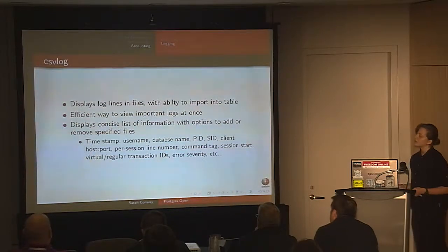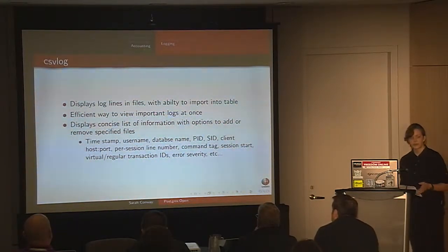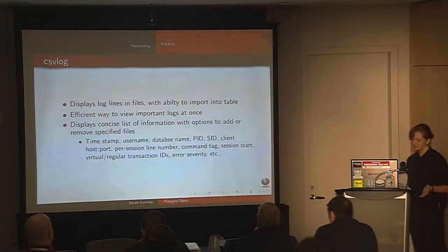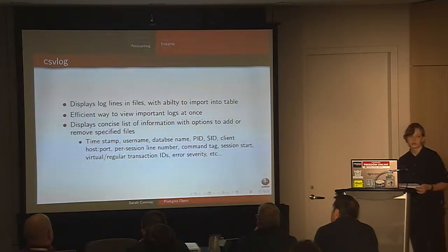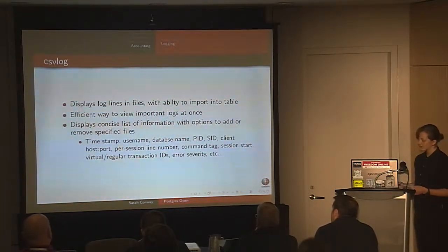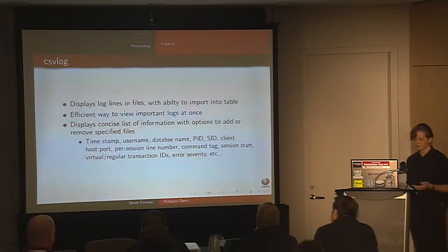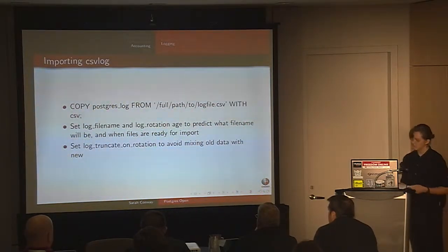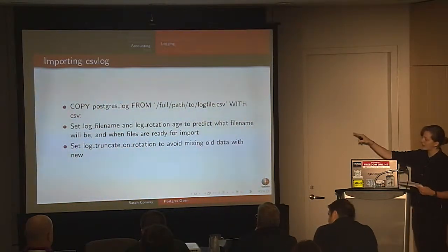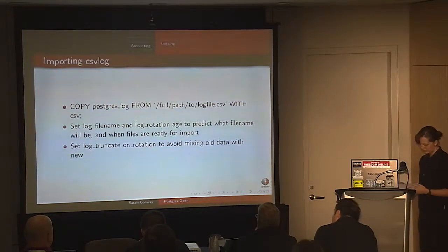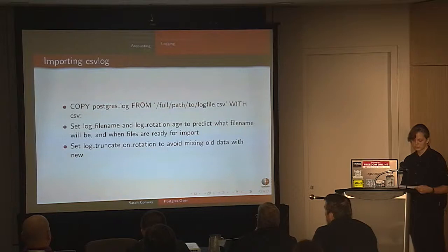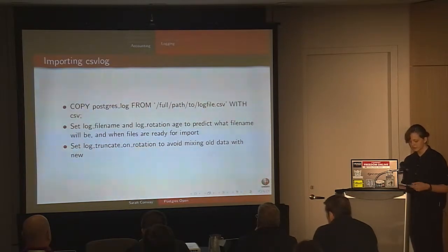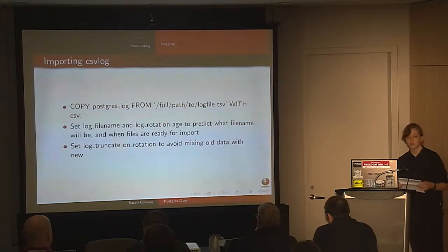Then there's csvlog, which displays log lines from imported log files in a single file, with the option to import them into a convenient database table. It's an easy, efficient way to view all logs at once rather than individually, and displays many aspects including timestamp, username, database name, and process ID. To import it: COPY postgres_log FROM 'full/path/to/log/file' WITH CSV. You can also set log_filename and log_rotation_age to assist in predicting file names, and set log_truncate_on_rotation to on to ensure old data is not mixed with the new.